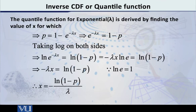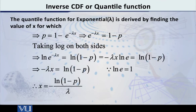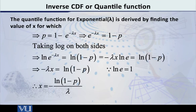Now we will take the natural log of both sides, so that e raised to something will be eliminated. So ln(e^(−λx)) = ln(1 − p). Since ln(e^(something)) equals that thing, our equation becomes −λx = ln(1 − p). Taking −λ to the other side, we get x = −ln(1 − p) / λ.